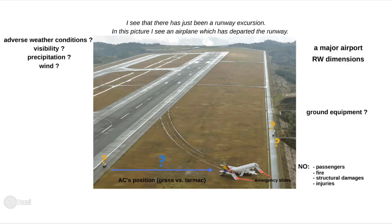But we can at least retrieve some information about the runway surface. It's kind of wet, as if it has been raining, but there is definitely no standing water. So we can suggest that there were no major problems with braking action. Having completed the brief description, let's move on and make a few logical assumptions on how and why it could have happened.